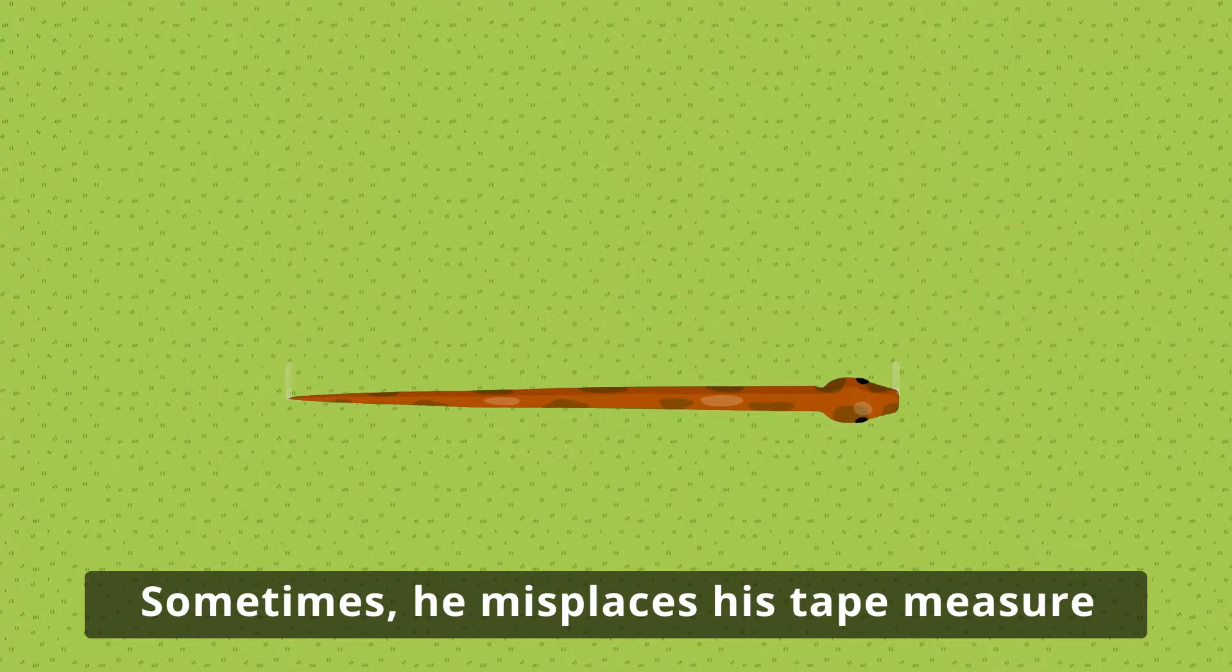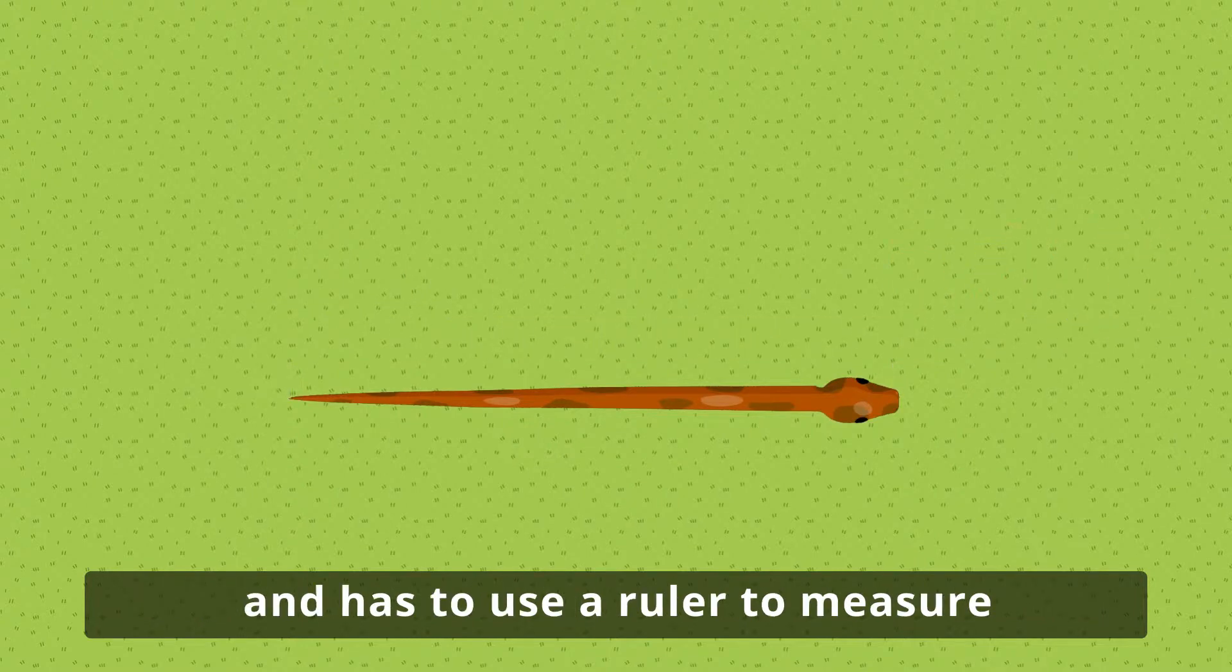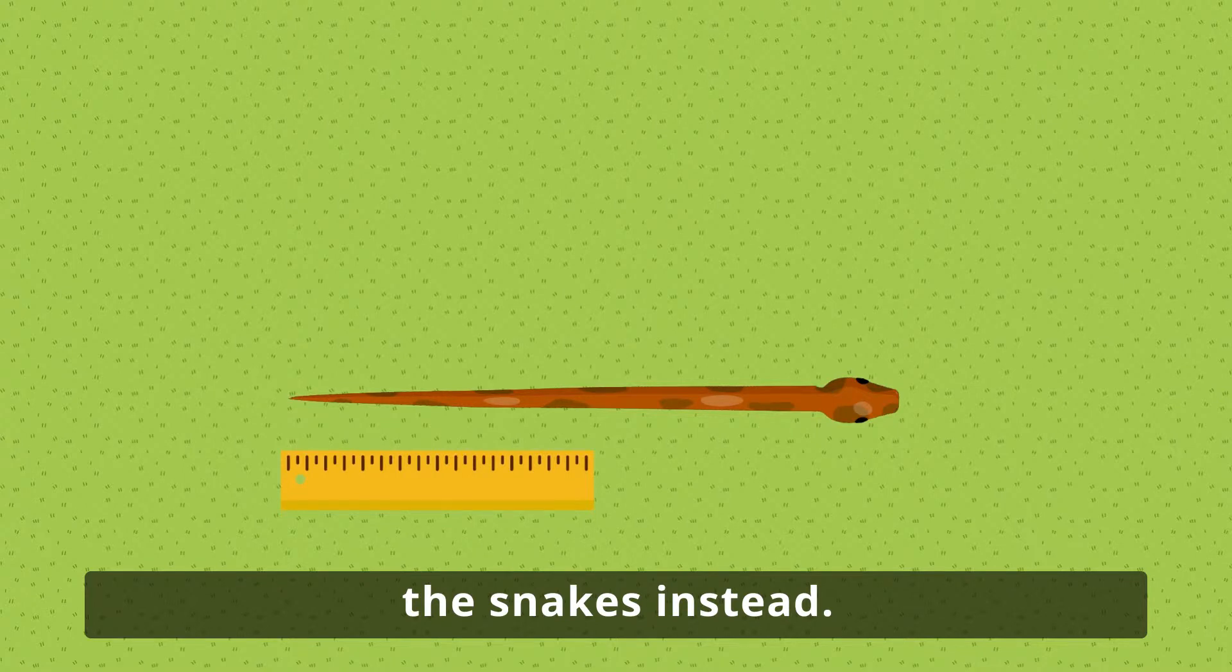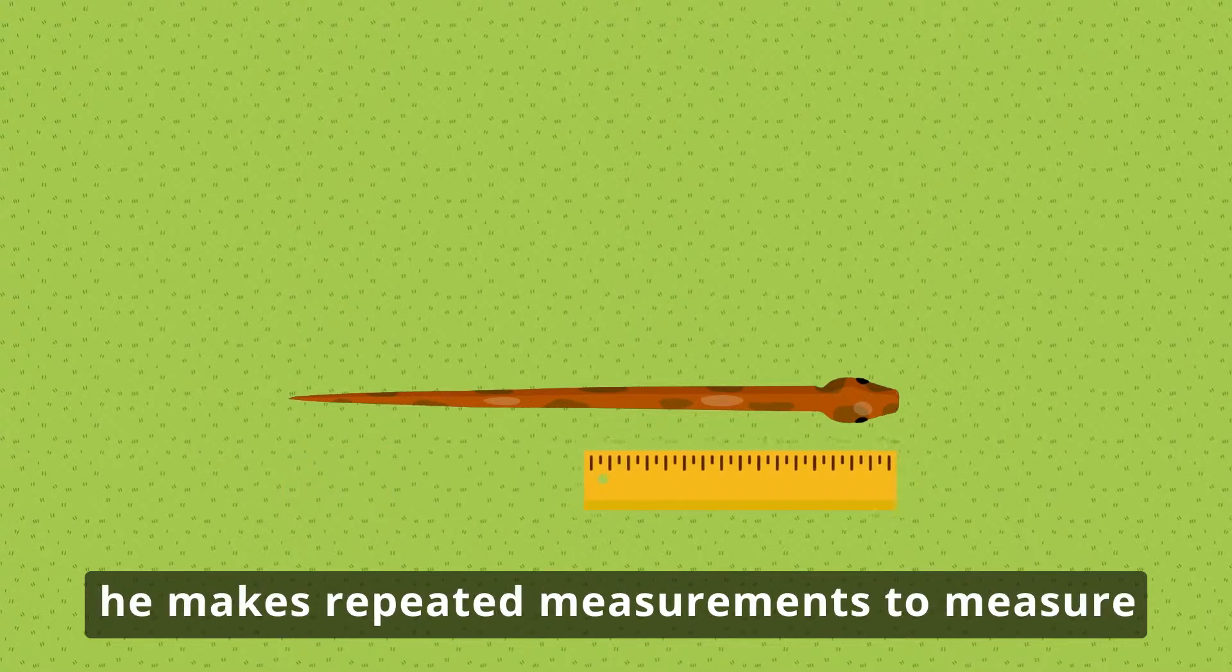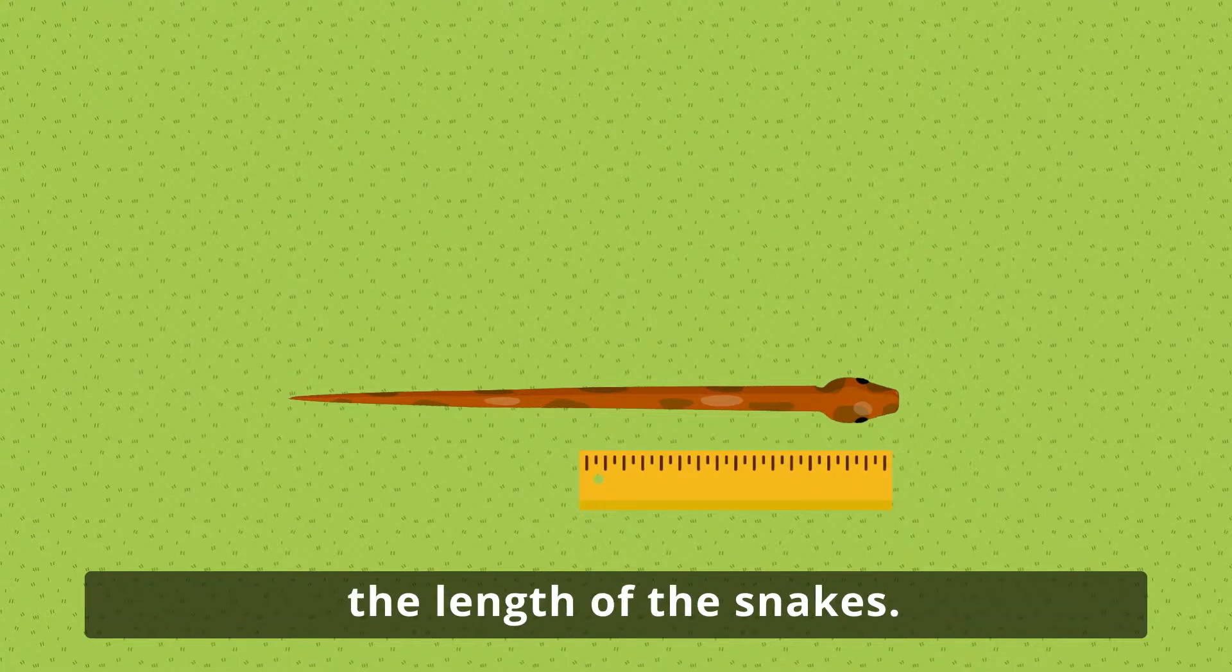Sometimes he misplaces his tape measure and has to use a ruler to measure the snakes instead. Since the ruler is a smaller measurement tool, he makes repeated measurements to measure the length of the snakes.